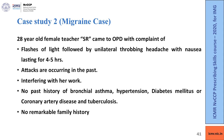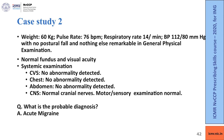Coming to the third part: a 20-year-old female teacher presents to the OPD with flashes of light followed by unilateral throbbing headache and nausea lasting four to five hours. There is a history of past attacks interfering with her work. No concomitant history of other disorders and no remarkable family history. On general physical examination, there is nothing remarkable. Normal fundus. Systemic examination reveals no abnormality on cardiovascular, respiratory, abdomen or CNS examination.